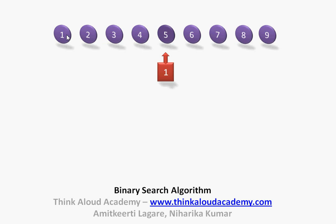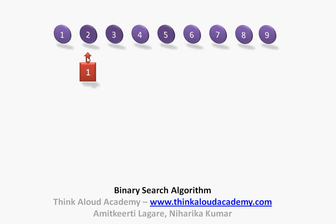Looking at the left half, I have to search using the middle element to check whether 1 matches it or not. I have four elements: 1, 2, 3, and 4. The middle elements happen to be two of them — 2 and 3. When there are two middle elements, we choose the lower one, which is 2. Since 1 does not match 2 and 1 is less than 2, we go to the left half of 2. In the left half there is just one element — 1 — and it matches. So we have found the element.